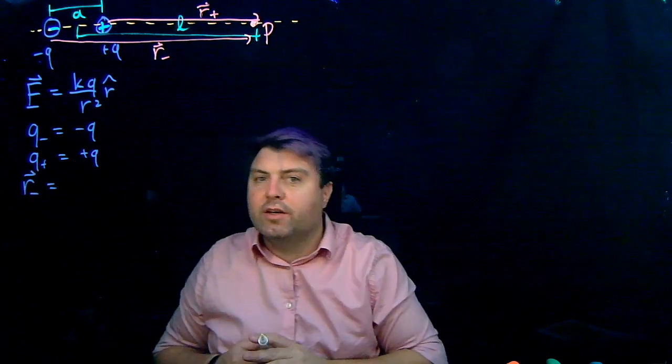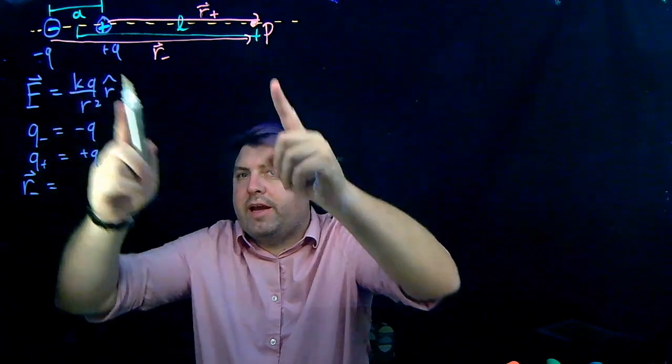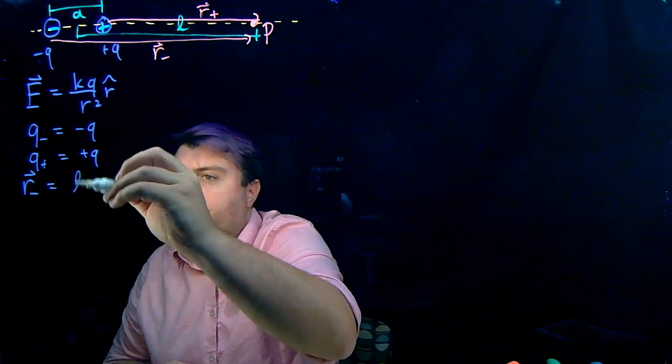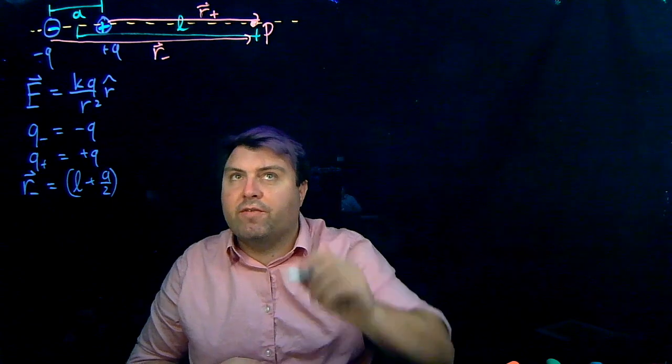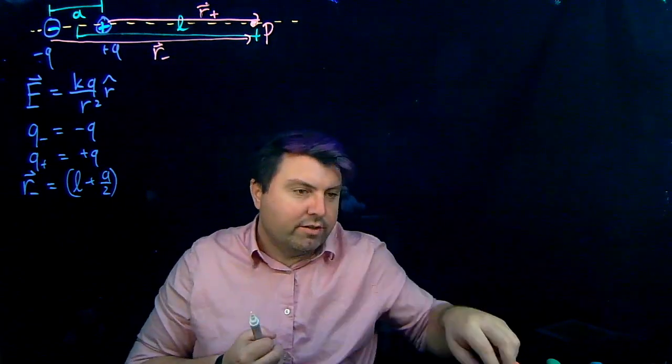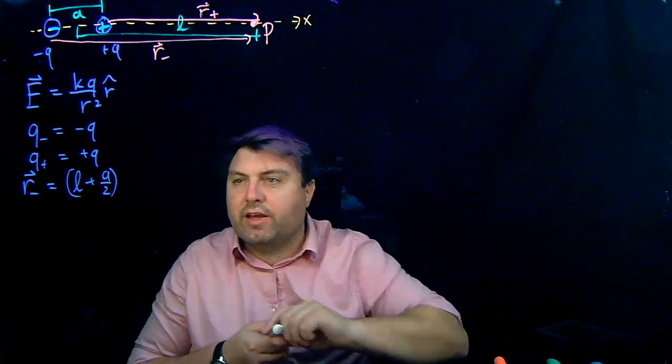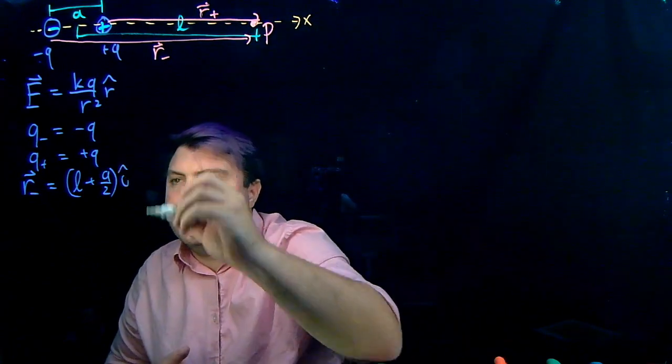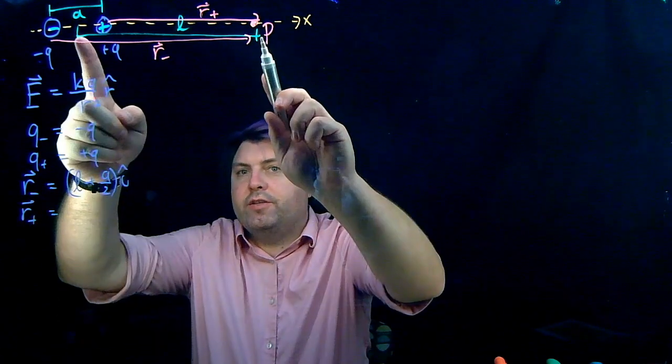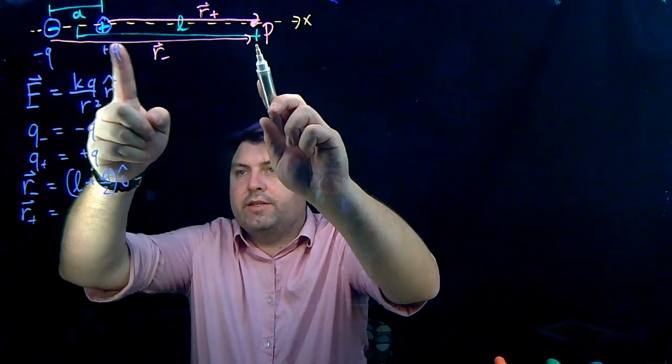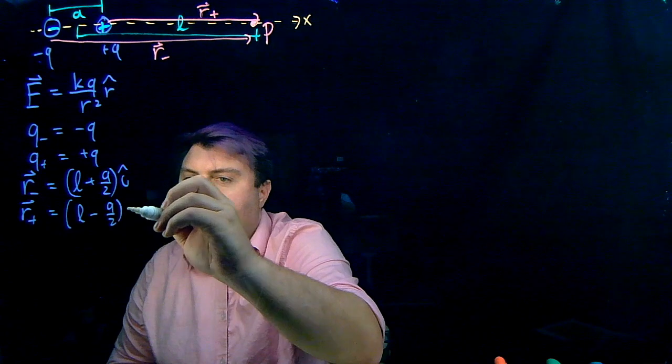So let's look at this, R vector minus. R vector minus, we have to go the total distance L plus a little extra, half of A. So we would write L plus A over 2. That's our direction we have to go in the X direction. Might as well define this as the X direction. And so that's going to be L plus A over 2 I hat. And then our R vector plus, we are going to have to go the distance L minus a little bit. So that's going to be L minus A over 2 I hat.